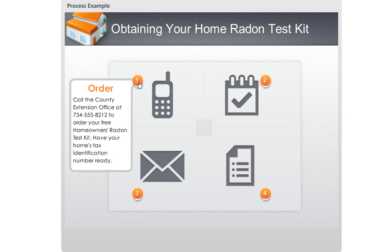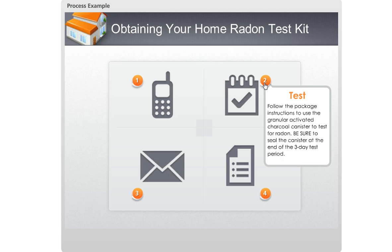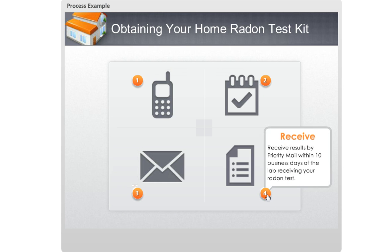Another idea is to use them to create a really clean and simple process interaction like we see here. In this example, I've got these four steps, and I want my learners to be able to notice the order in which the steps are performed. So rather than use an icon or a symbol on my markers, I've used these numbers, and that way it's super clear to the learner the order in which the steps need to happen.